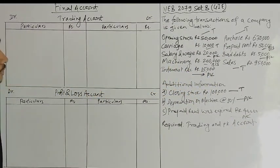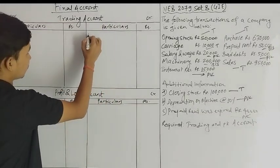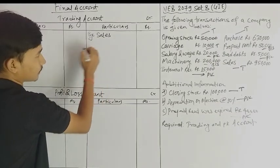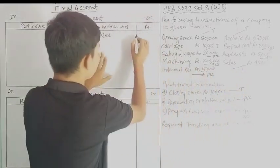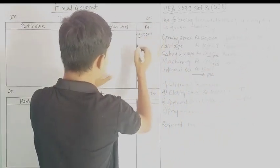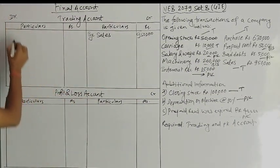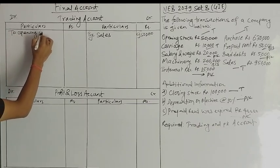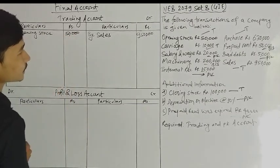I am now doing trading — P&L account. I will start with opening stock. Opening stock comes in, and then we have sales. Sales are income — we record sales. Sales come to 95,000. Opening stock is 50,000.